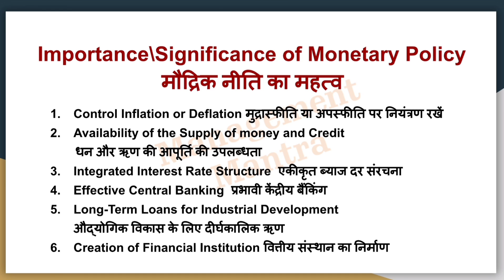वहीं अगर interest rate कम हो जाए तो लोग loan ज़्यादा लेंगे, market में demand बढ़ेगी, price increase होगा और महंगाई बढ़ेगी। तो आप monetary policy से इसको पूरी तरह control कर सकते हैं। दूसरा है availability of supply of money and credit — monetary policy अपने charges में changes करके money और credit की supply को control कर सकती है। लोगों को उधार में कितना पैसा मिलेगा, यह decide किया जा सकता है। तीसरा है integrated interest rate structure — underdeveloped countries में यह ठीक से follow नहीं होता, जहाँ different sectors के लिए different rates charge होती हैं।